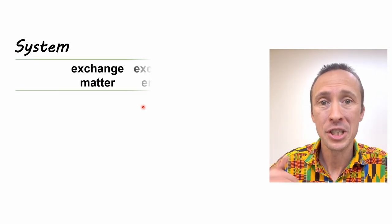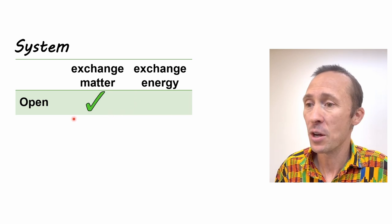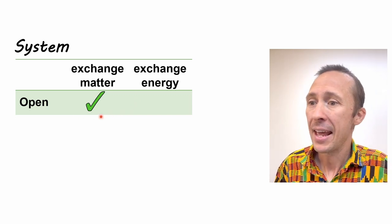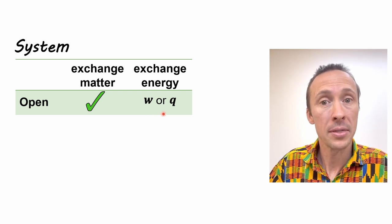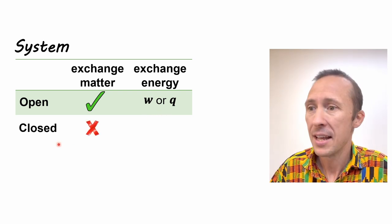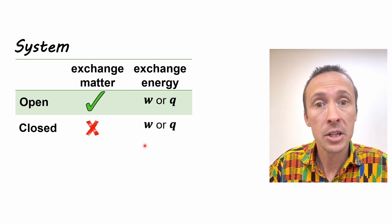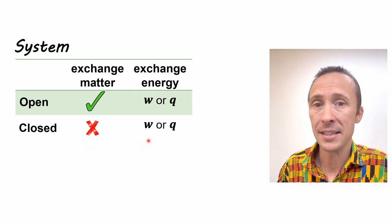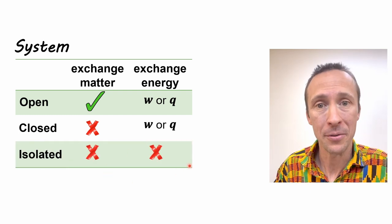All right. So here's some cheat sheet lists that you can use. If the system is open, it allows for the exchange of matter and it may allow for the exchange of energy as heat or work. We would need to know what the process is or more details. If it's closed, then that means no matter can be exchanged, but energy still could be exchanged as work or heat. And an isolated system cannot exchange matter or energy with the surroundings.